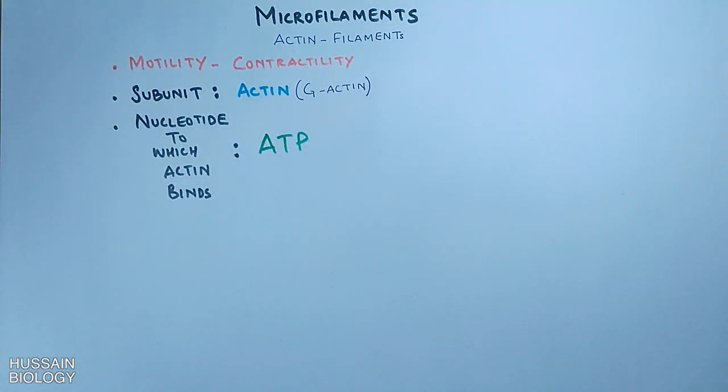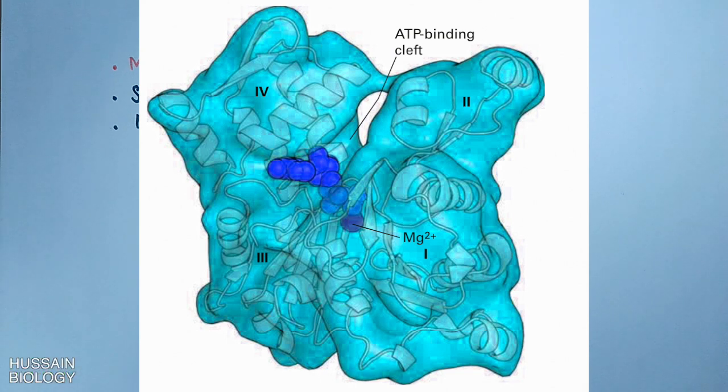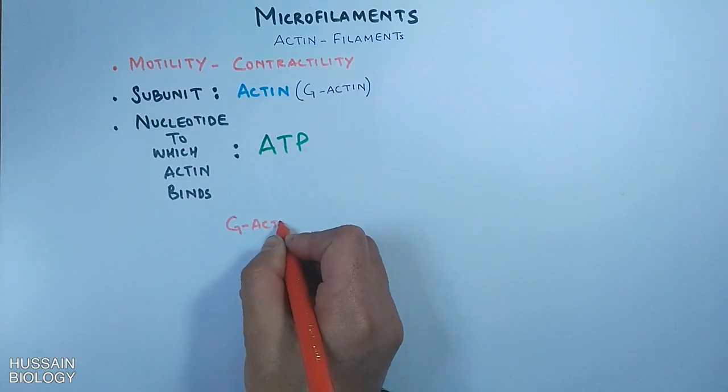First of all, let's see the structure of G-actin monomer. In this structure we can see it has four subunits plus it has ATP binding cleft. The G-actin is a globular monomer protein.